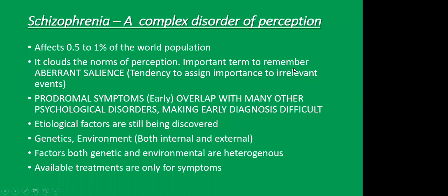You should note down the term 'aberrant salience.' When someone's normal perception is disrupted, certain neuronal circuits essentially give importance to irrelevant events. The other term you'd like to note is 'prodromal symptom.' A prodromal symptom is when - during the early stage when the disease is not yet completely full-blown - you have early symptoms.